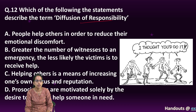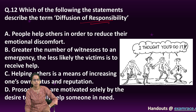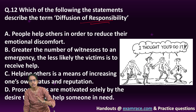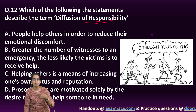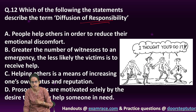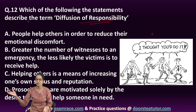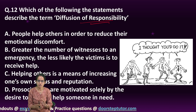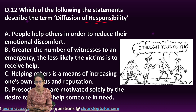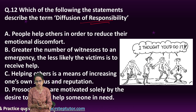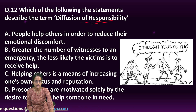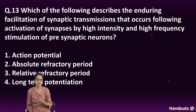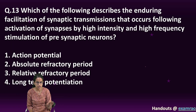Diffusion of responsibility means that if there are many people witnessing an incident, none of them would actually help the victim, each thinking that another person would help. This is one of the experiments discussed in detail in the video lectures, so go through those lectures again extensively.